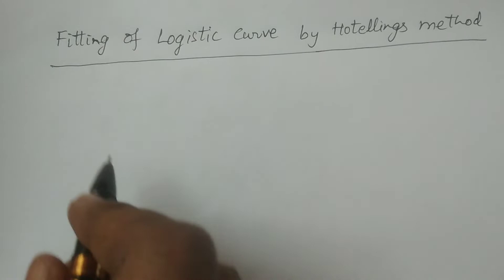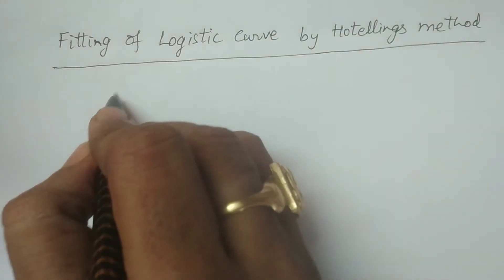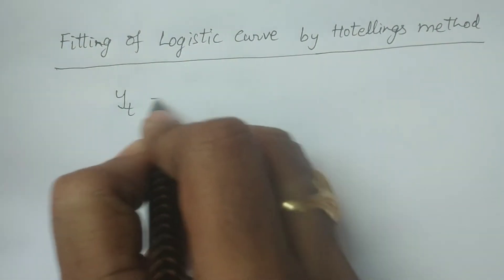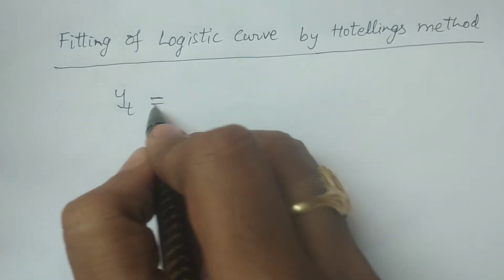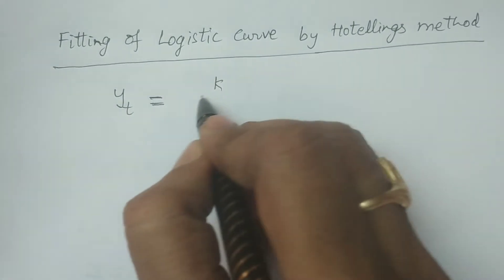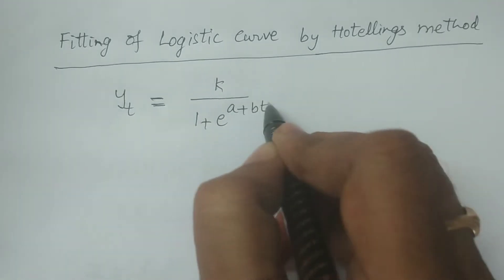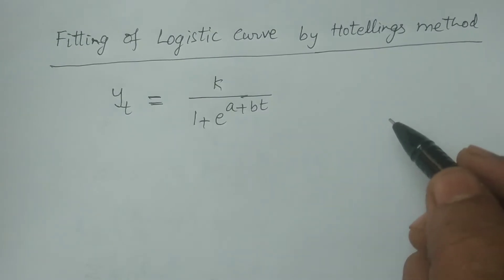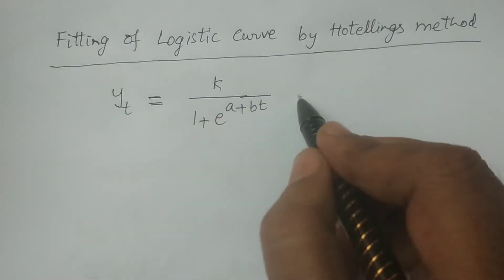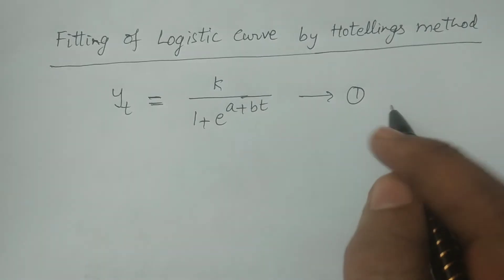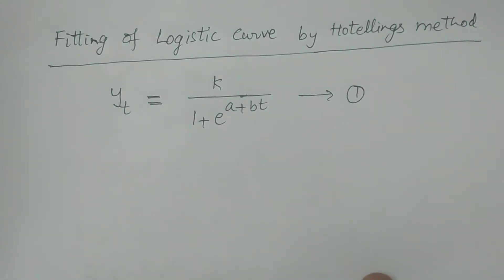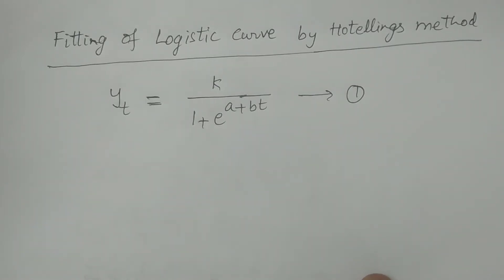In this particular method, first of all, I consider the logistic curve: y_t is equal to k divided by 1 plus e to the power (a plus bt). This is the logistic curve to be considered. By the method of Hotlinks, we have to consider a property of the logistic curve.